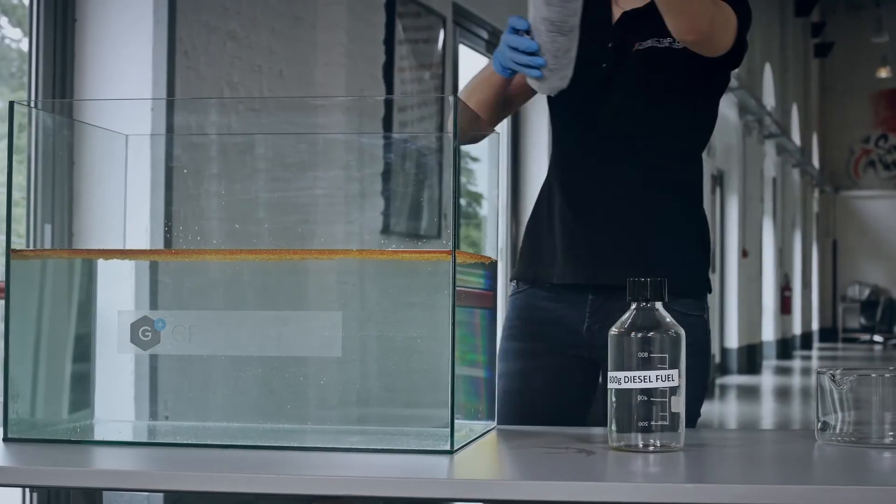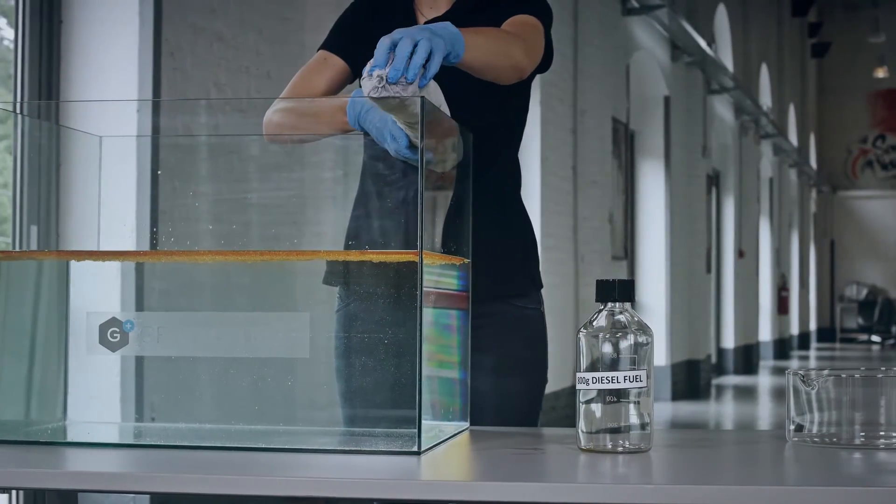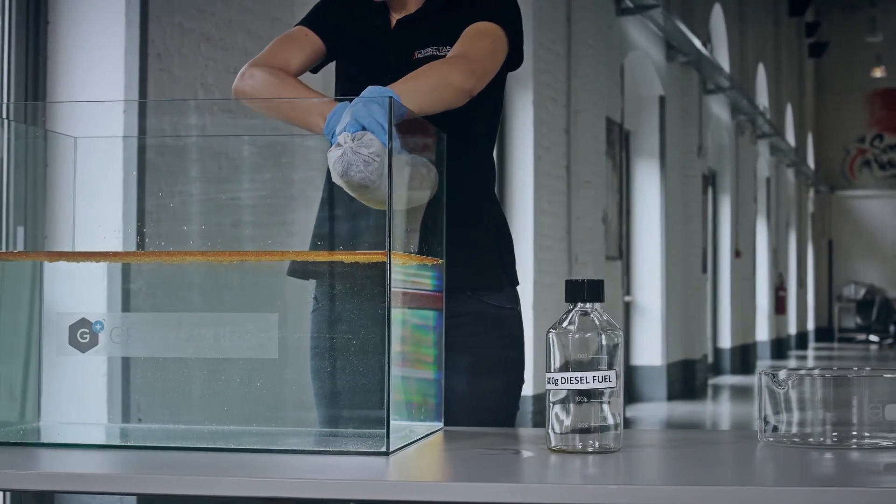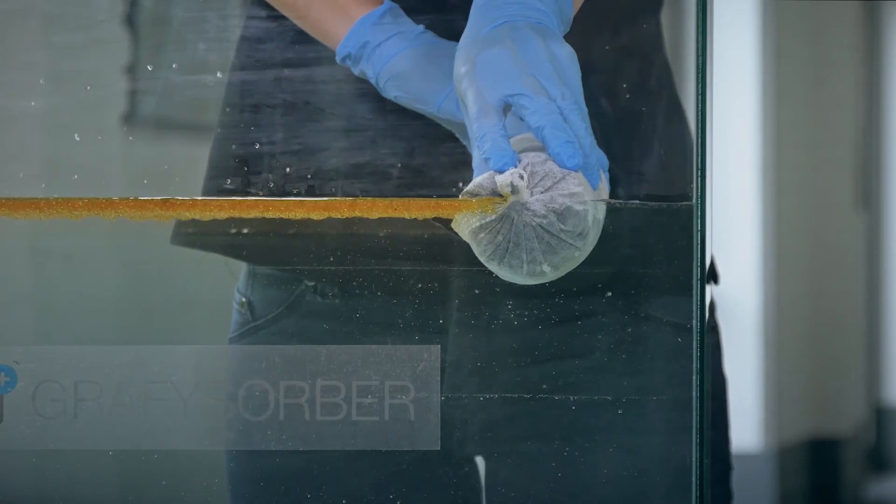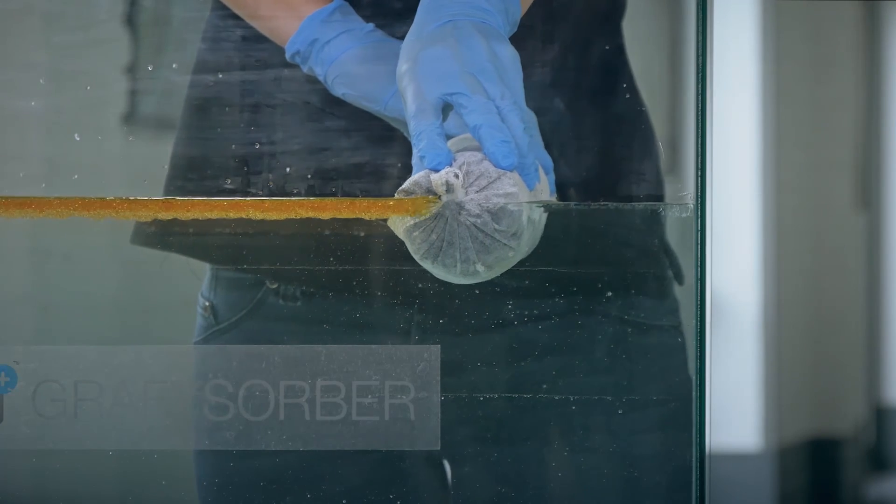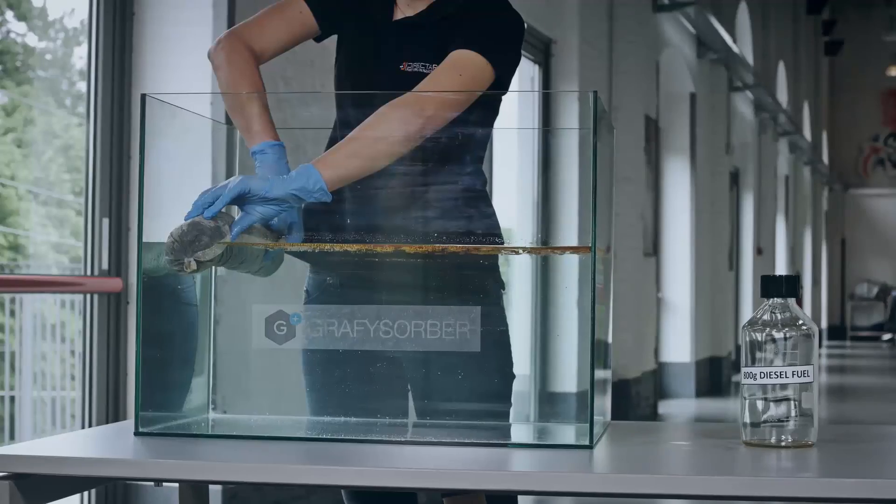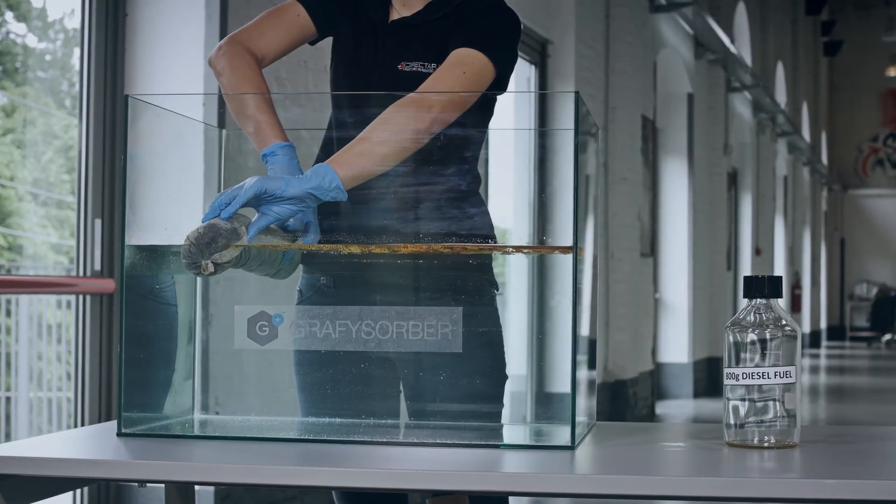About 800 grams of colored diesel are poured into fresh water. With a barrier of about 60 centimeters in length and 7.5 centimeters diameter, filled with 20 grams of GraphiSorber, we're going to demonstrate the fast absorption capacity of Directa Plus' product.